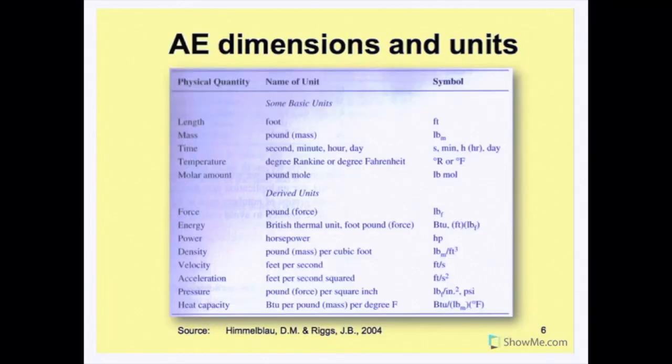This table shows common American engineering dimensions and units. Let's start off with length. The unit for length in AE is the foot, and the symbol is F-T. If it's one foot, then we pronounce it as foot, and if it's more than one, it's pronounced as feet. So it's one foot for two feet, three feet, four feet, and so on. For mass, it's the pound mass, L-B subscript M. It's very important to include the subscript M here to show that it's different from a different type of pound that you'll see later.